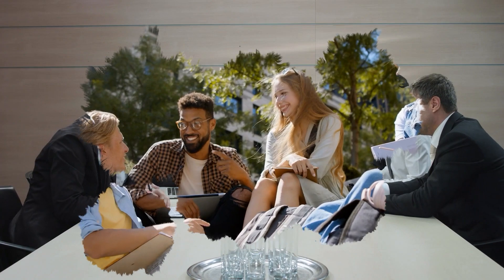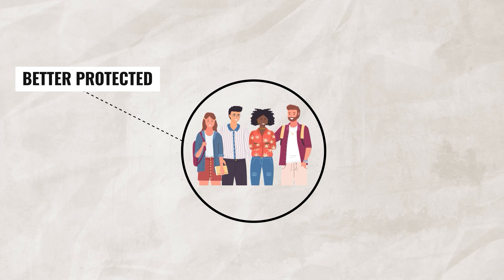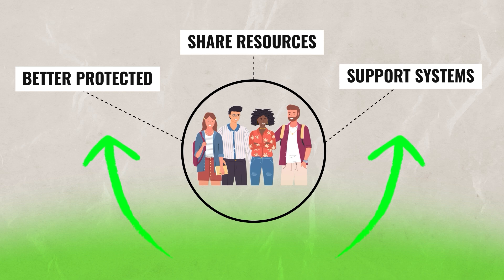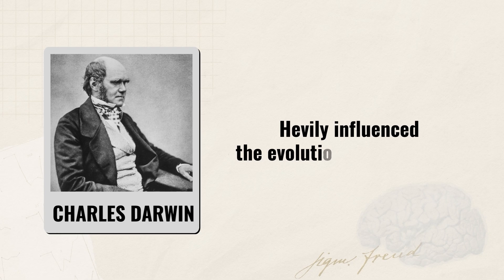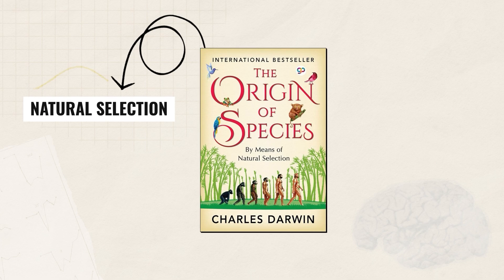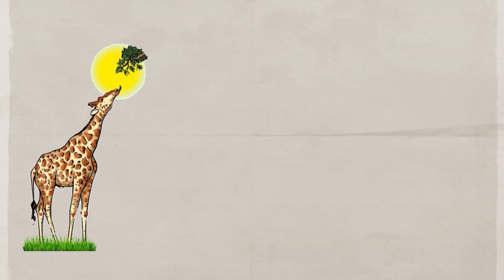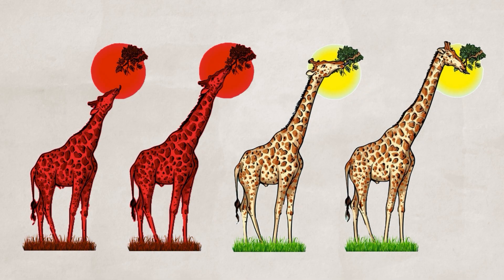Cooperating with others and having close friend groups increased early humans' chances of survival. When people are in groups, they are able to be better protected, share resources, and have support systems, which allow individuals to thrive and grow. Charles Darwin — who actually wasn't a psychologist — heavily influenced the evolutionary perspective. Darwin published The Origin of Species, which talked about natural selection and the theory of evolution, stating that humans and animals pass on specific traits that help them survive to their offspring, while traits that do not help the species survive would not be passed on. This became the foundation for the evolutionary perspective.